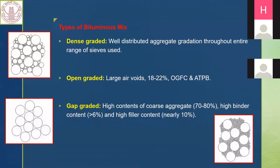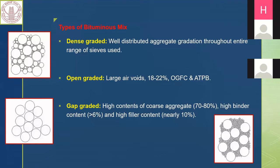The second type is open graded bituminous mix. As the name suggests, not all grades of aggregates are present — only bigger aggregate sizes are there, smaller sizes are absent. Air voids in open graded mixes are very high, ranging from 18 to 22 percent. Examples of open graded mixes include OGFC and ATPB, which are used in special cases where drainage and other facilities need to be provided.